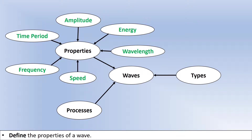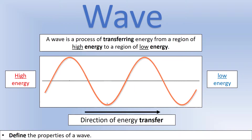We're going to start off looking at the properties, and there are six that we are going to focus on — these are the things you can measure about a wave. First, let's define what a wave is and link it in terms of energy. A wave simply is a mechanism of moving energy from one place to another, from a region of high energy to a region of low energy. A wave is simply a mechanism to move energy.